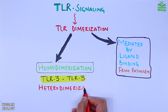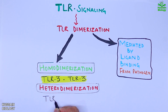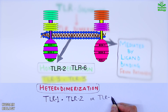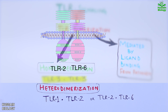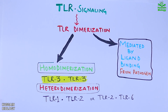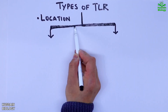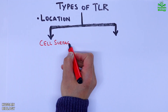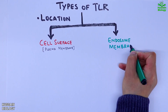The second form is heterodimerization, where two different molecules dimerize to form a dimer — like TLR1/TLR2 or TLR2/TLR6 dimers, as shown in the animation. Now let's get to the types of TLR on the basis of localization. We have cell surface TLR molecules and endosome membrane TLR molecules.